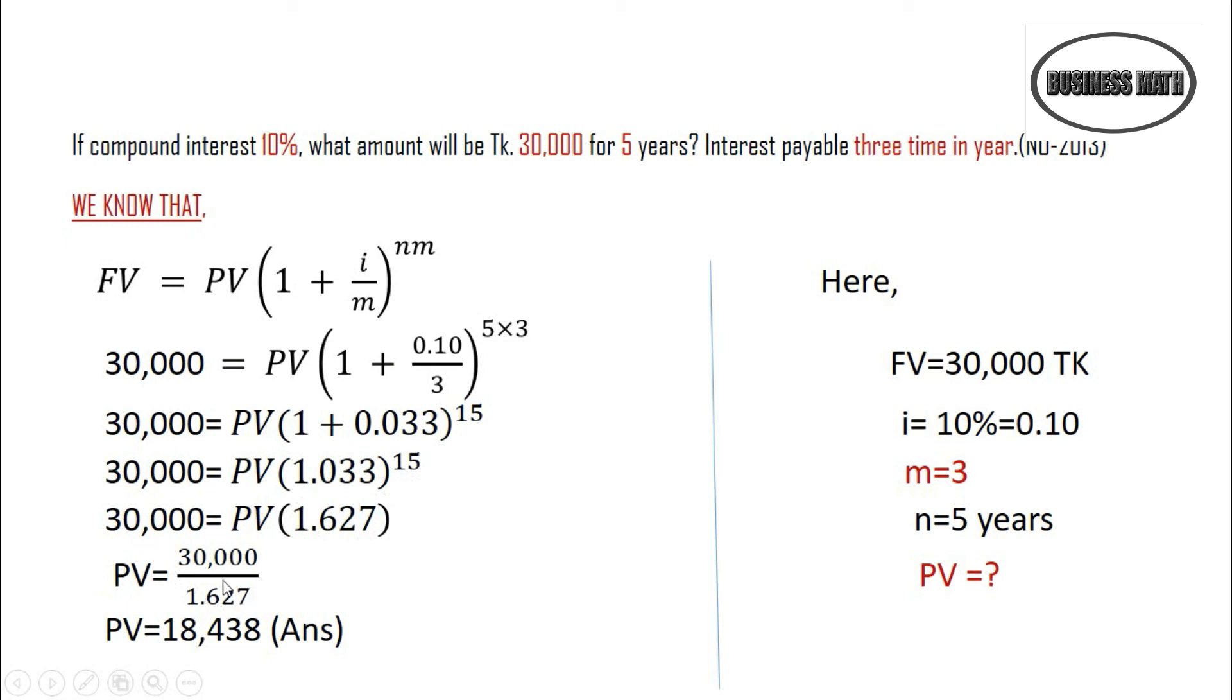Dividing 30,000 by 1.627, the result for PV is 18,438.